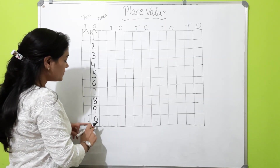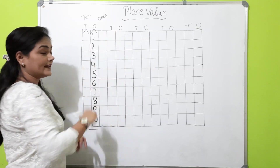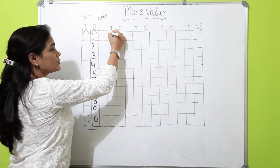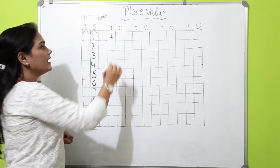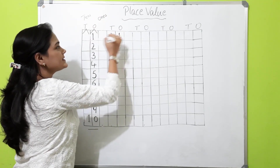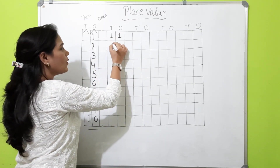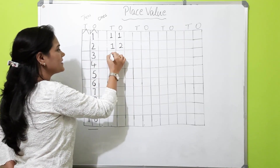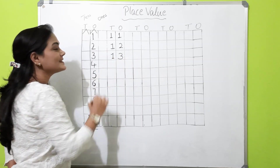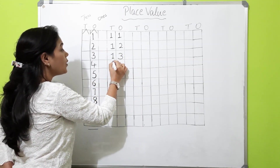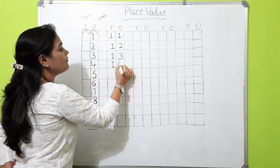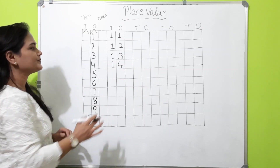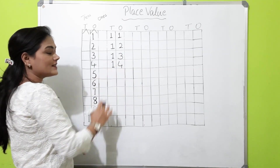Now we have written one ten. And one is eleven. One ten and two is twelve. One ten and three is thirteen. One ten and four ones — we can call it four ones also, or just four; it's the same thing. So one ten and four ones is fourteen.